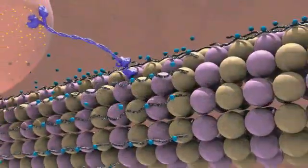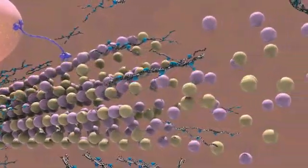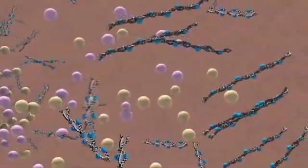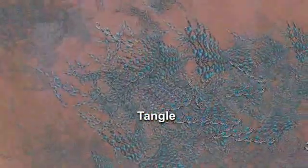In Alzheimer's disease, abnormal tau separates from the microtubules, causing them to fall apart. Strands of this tau combine to form tangles inside the neuron, disabling the transport system and destroying the cell.